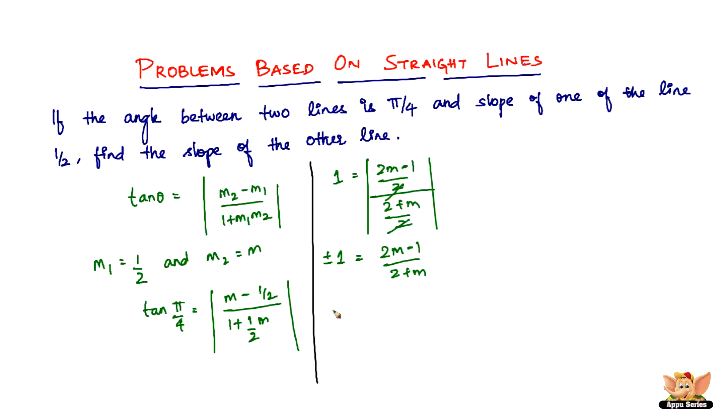So we have now 2m minus 1 equals m plus 2, or 2m minus 1 equals minus of m plus 2. So we have m equal to 3 or m equal to minus 1 by 3 on solving these two equations.